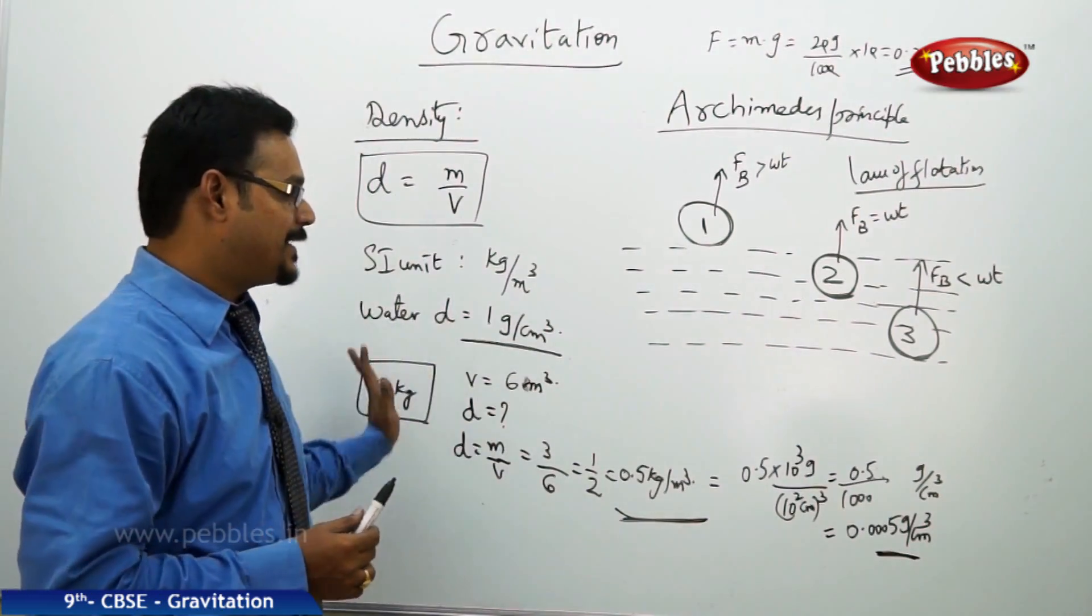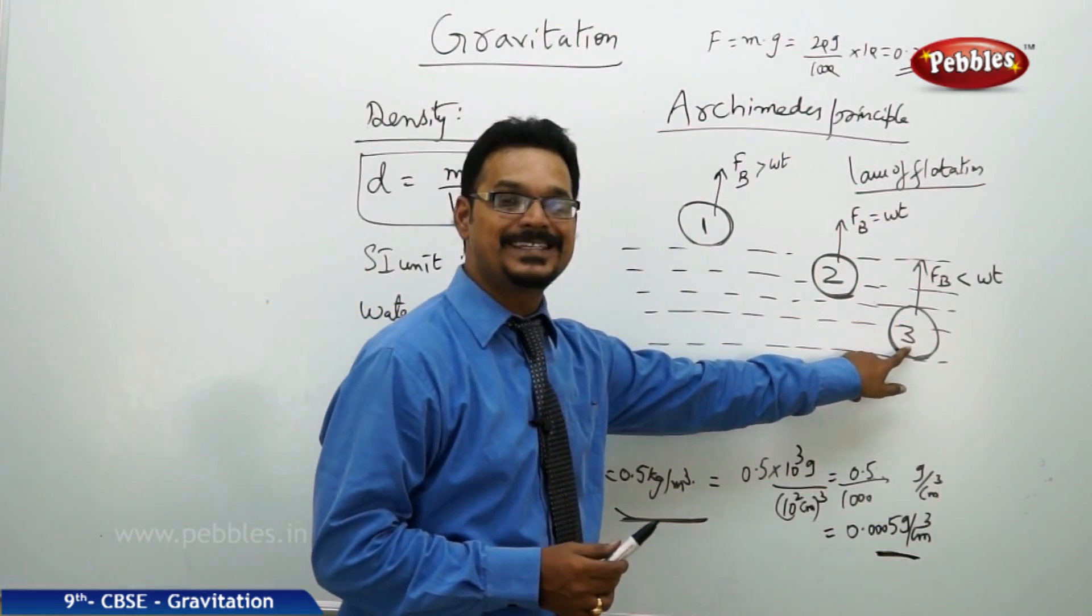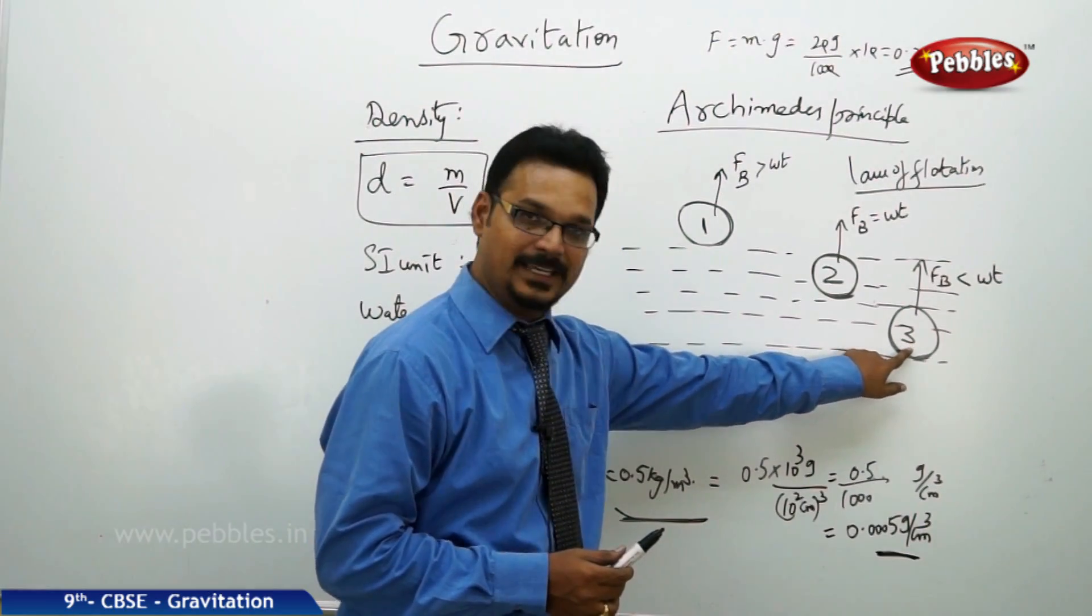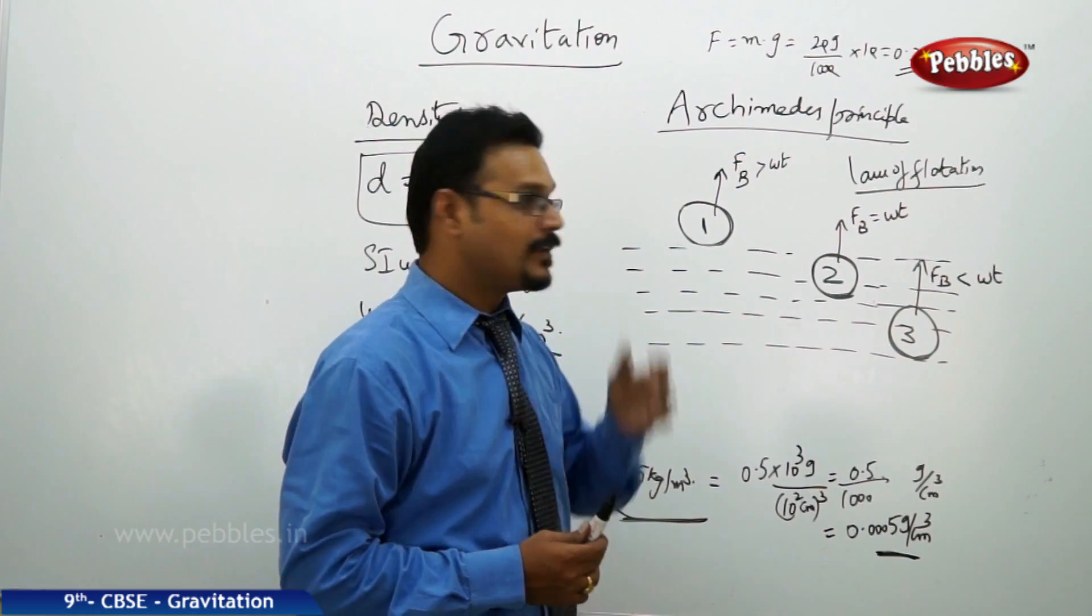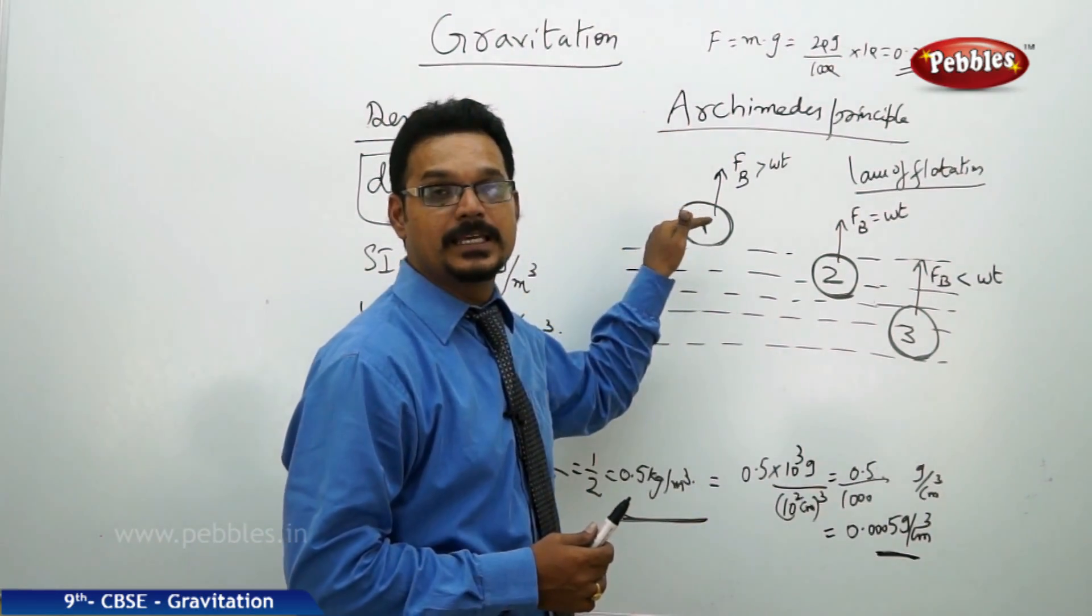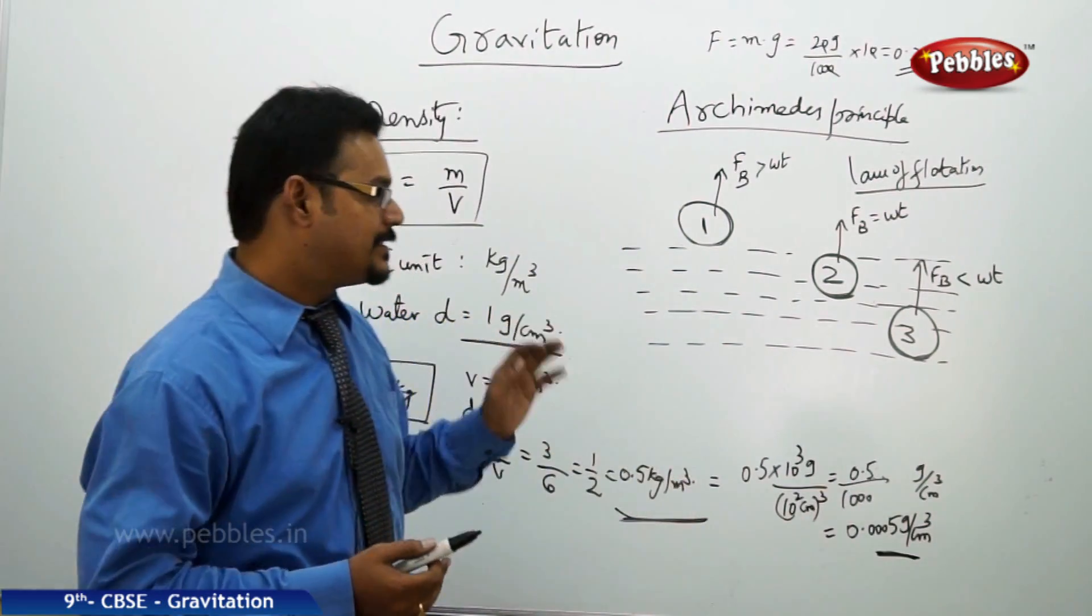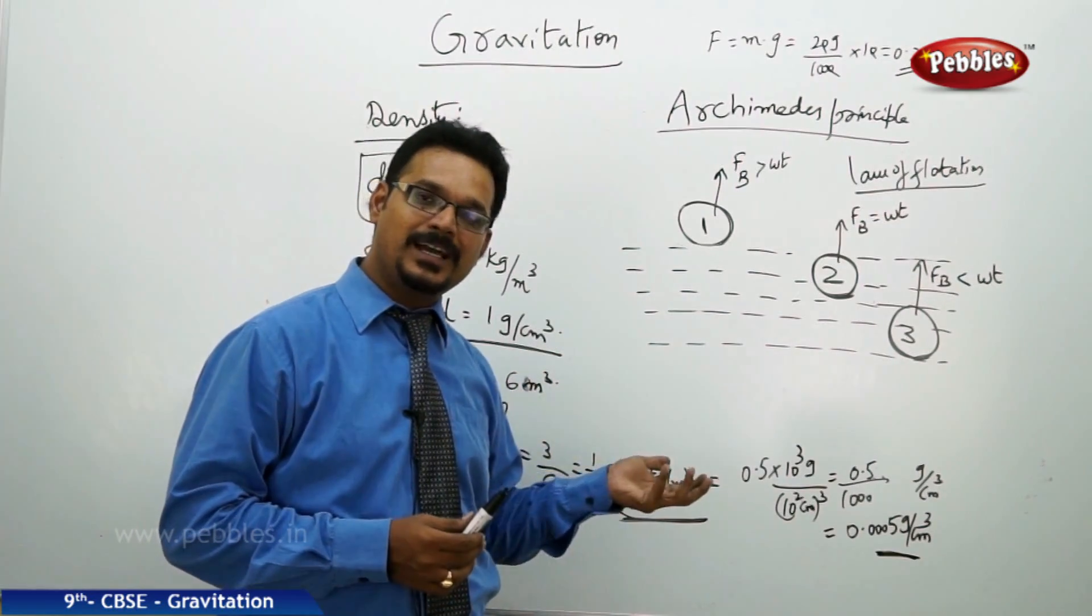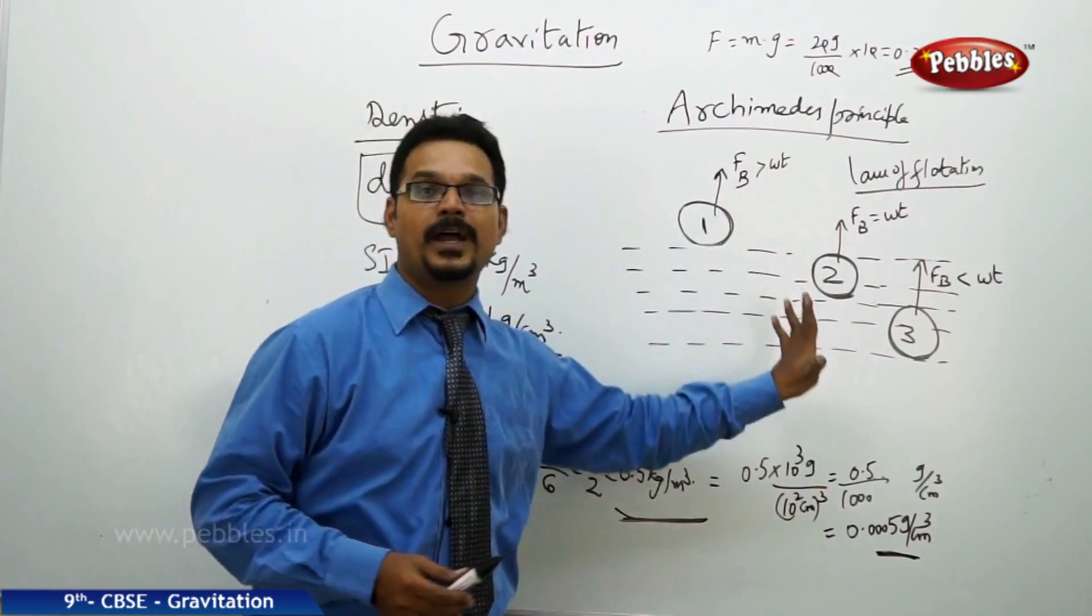So if you apply the same knowledge here, see here, see the third one. The third one sinks into the water because its density is more than water density. It floats on the surface of the water because the density is less than density of water. So that is how we can say why the bodies are sinking or floating based on the densities, based on the buoyant force.